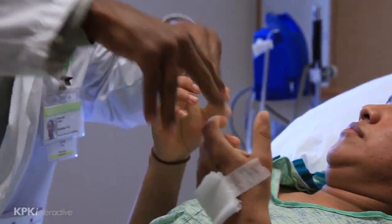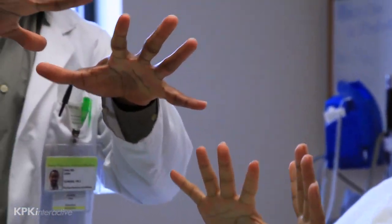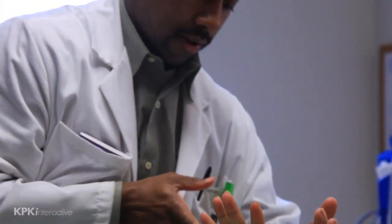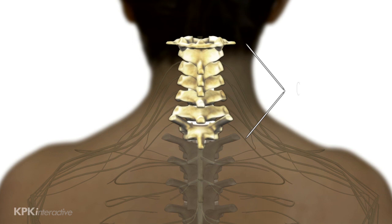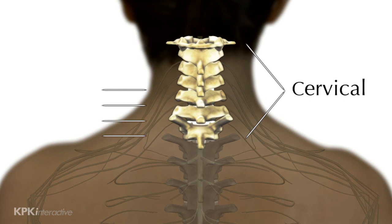The level of injury designation is a letter followed by a number that corresponds to the spinal nerves. This subchapter covers information about cervical level of injury from C5 to C8.